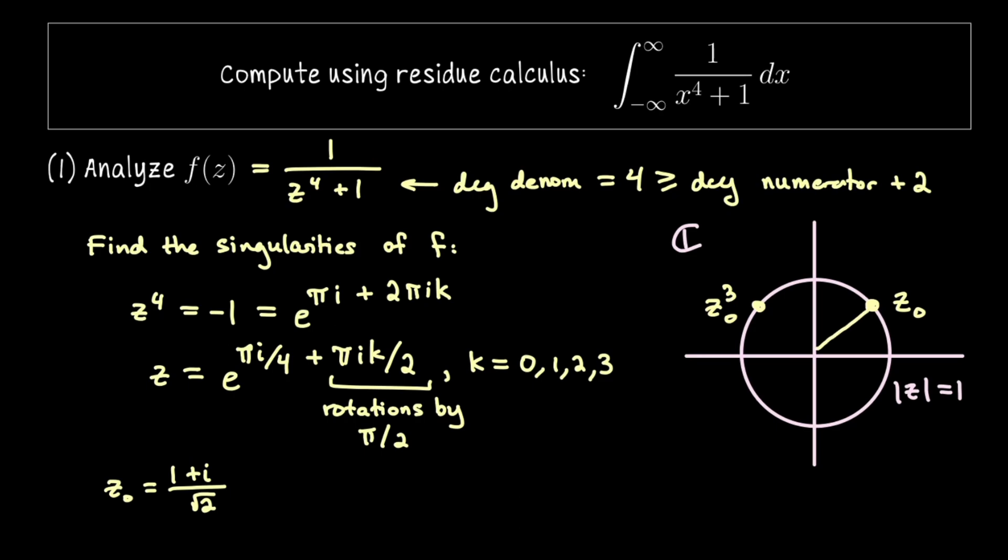And that's because if you don't see that we rotate by pi over 4 to get to z naught, pi over 4 again to get to i, and then pi over 4 again. So doing the rotation that gives us z naught three times lands us on the second pole. So that's z naught cubed.